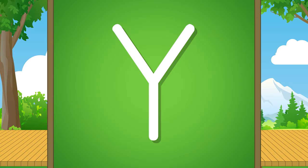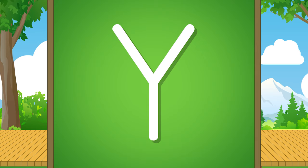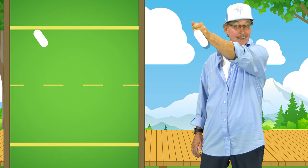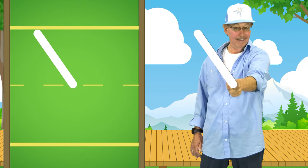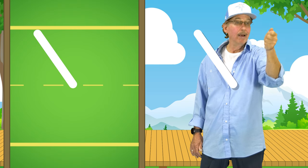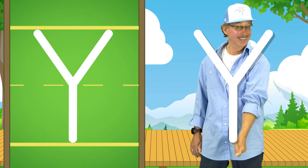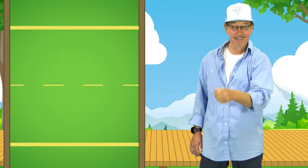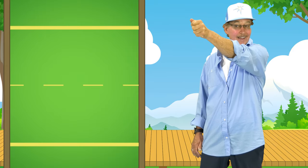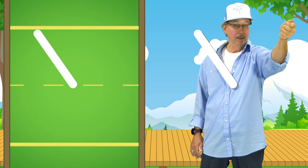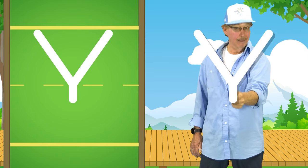This is an uppercase Y. Look and see. Write an uppercase Y in the air like me. Start at the top, slant down to the middle. Lift over to the top, slant in, straight down a little.